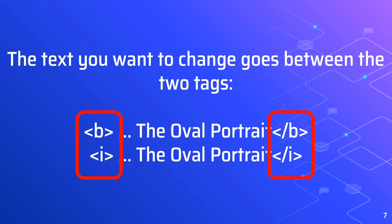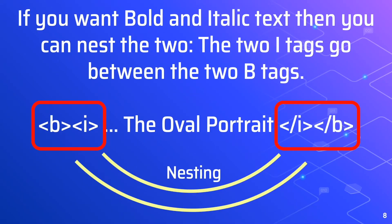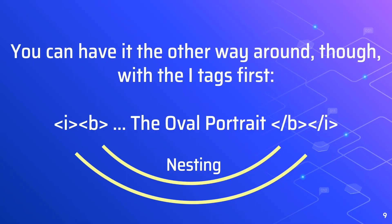If you want bold and italic text, you can nest the two tags. This is the principle of nesting — the tags should not cross over. You can have it the other way around though, with the I tags first. You can interchange them as long as they don't cross over.